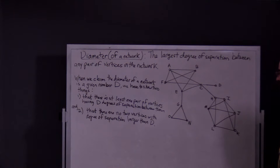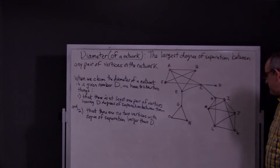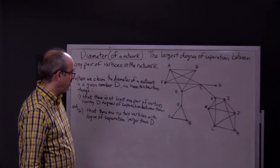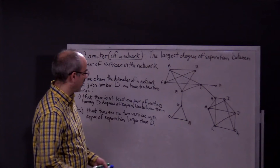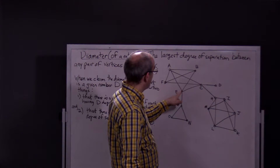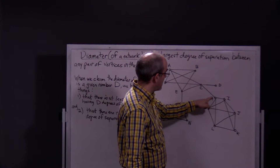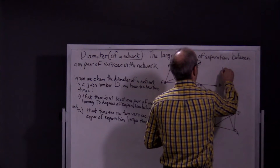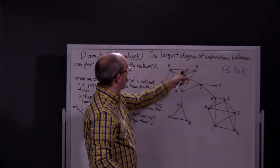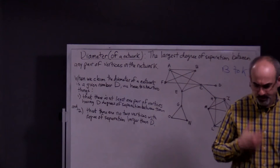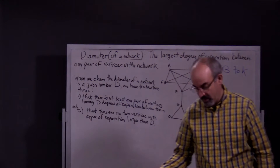We know the diameter is at least four because we found some pairs with four. Let's pick a couple and see. Let's try B to K. To get from B to K, you go to E — that's one — then two, three, four, five. Now we know it's not four either because we just found a pair with degree of separation five.